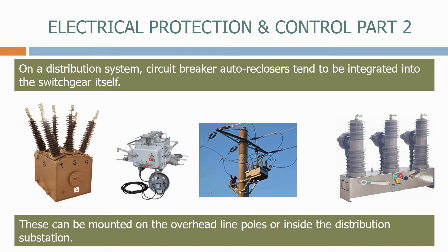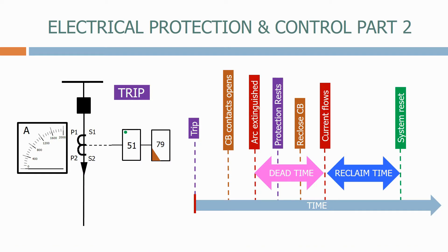When a fault occurs on the system we trip the circuit breaker and clear it. For certain types of faults in electrical systems we sometimes want to re-close the circuit breaker to get the customers connected again. This principle is called auto-reclosure, and in the next section we look at all the auto-reclosure equipment that you will come across.